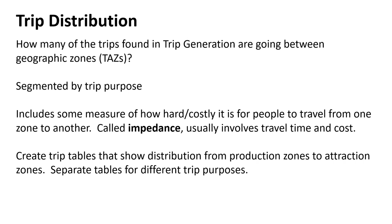Using this impedance, we create trip tables between production zones and attraction zones. In travel demand modeling, where you live is a production zone — you're producing a trip. Trips are typically produced in residential areas, but also at workplaces during lunch. The attraction zone depends on what your trip purpose is.